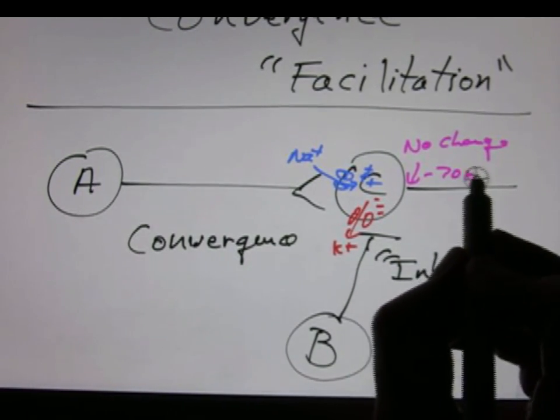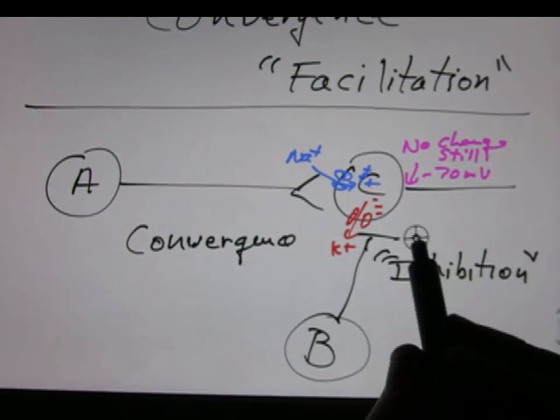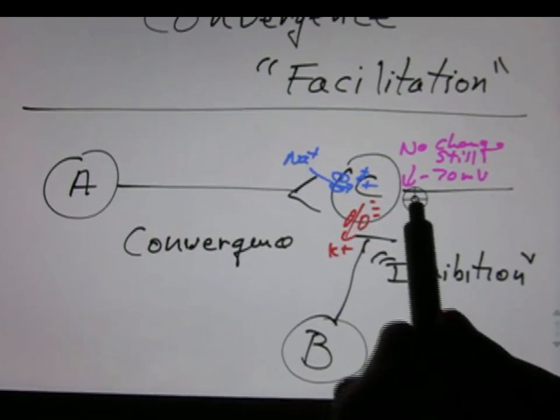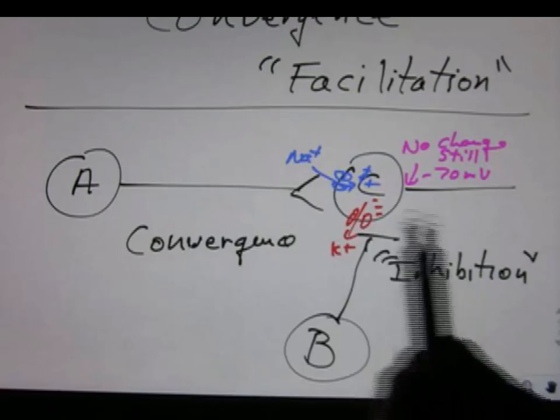Still minus 70 millivolts. Maybe the sodium entry alone would have been enough to get to minus 45 and start an action potential. But with this potassium leaving, that blocks it, it inhibits it.